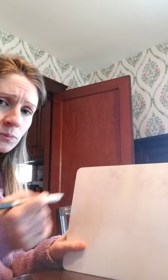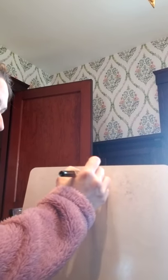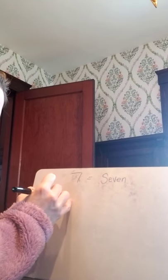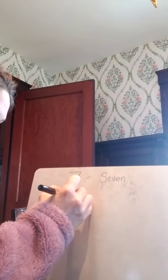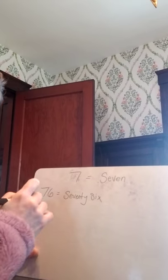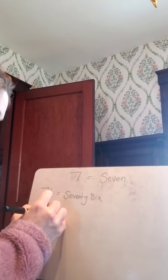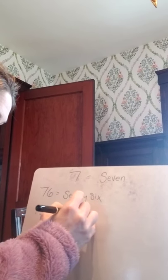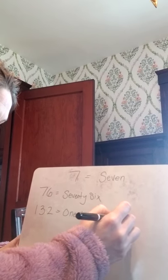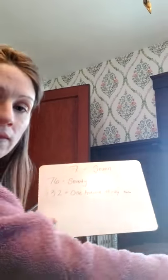If I had a number, let's say I have seven — I would write seven in word form as "seven". If I had seventy-six in word form, I would write it out using words as "seventy-six". If I had one hundred thirty-two, I would write it using words as "one hundred thirty-two". That's word form.